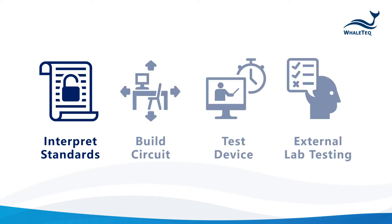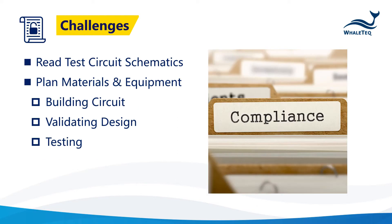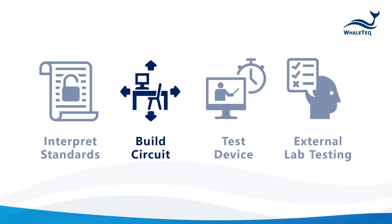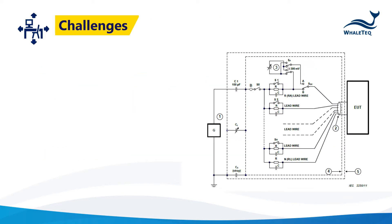As with any standards, you first start by understanding the details. For CMRR, that means reading the test circuit's schematics and planning out the materials and equipment for building, validating, and testing with your circuit. Once you start building, you must be able to validate your design. Let's take a look at the CMRR testing schematics and consider some potential challenges.